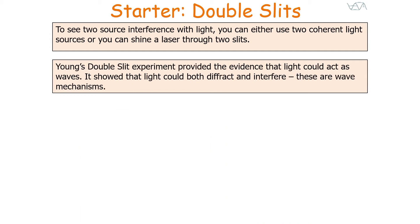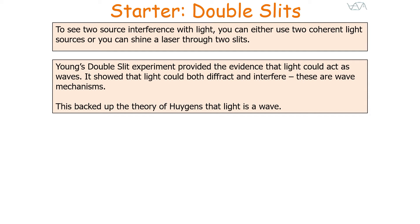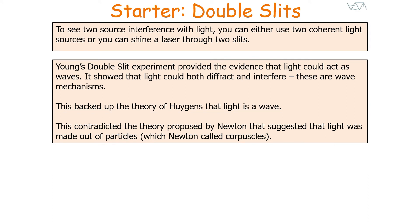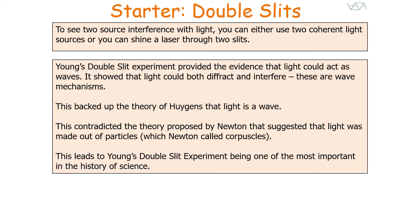Young's Double Slit Experiment was very important because it provided evidence that light could act as waves. It showed that light could both diffract and interfere — the light source diffracts through the gap, and then the waves interfere with each other to produce the interference pattern on the screen. These are both wave mechanisms, which backed up the theory of Huygens, who said that light was a wave. This contradicted the theory proposed by Isaac Newton, who suggested that light was made out of particles — which Newton called corpuscles. This makes Young's experiment one of the most important in the history of science, as it was the first experimental proof that light acts as a wave and not as a particle.